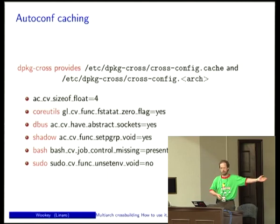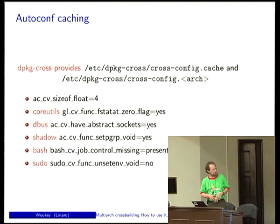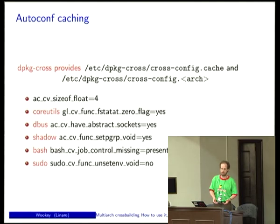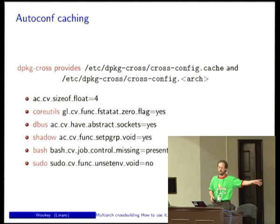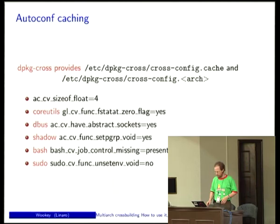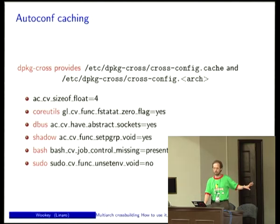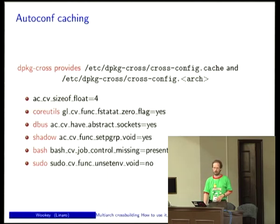The cache files contain lots of information like how big a float is on this architecture, or whether some library has a particular function — things where autoconf would normally compile and run a little test program. If it can't do that during cross-building, we just provide the cached answer. The problem is this information can go out of date, but with a centralized list it should be easy to keep right. If you get it wrong, for example, you'll get no job control in your bash — it works but job control is quite handy.